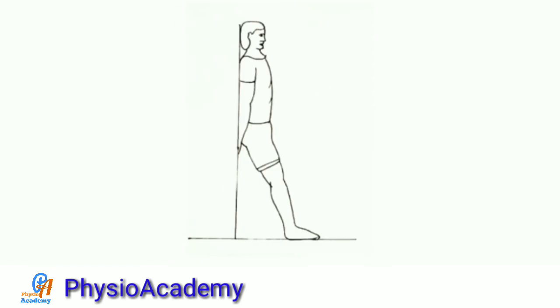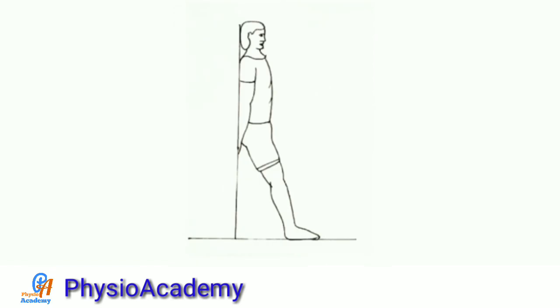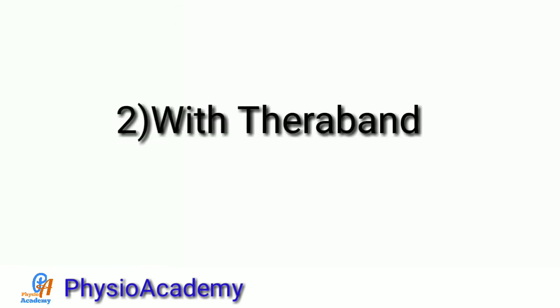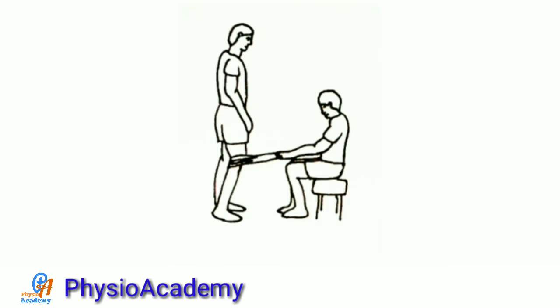Second exercise with theraband: the patient is in standing position. The therapist places the theraband at the patient's knee, then asks the patient to push the knee backward against the resistance, hold that position for five seconds, and then relax.